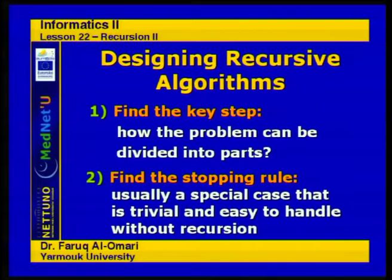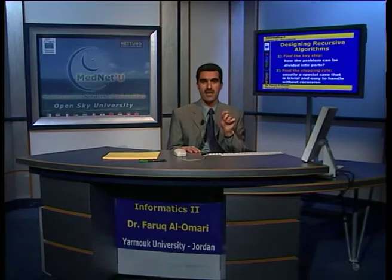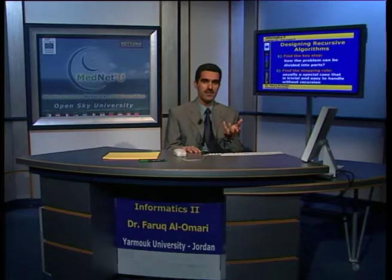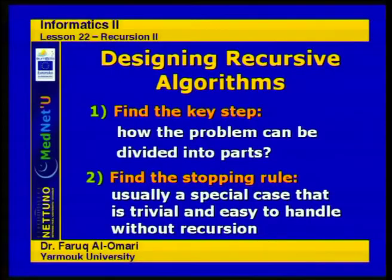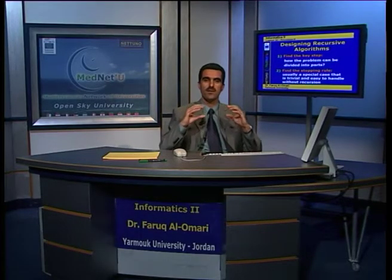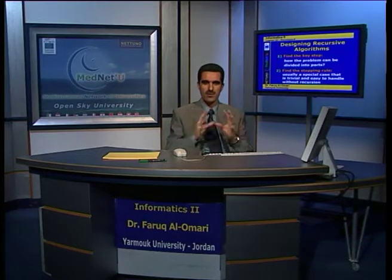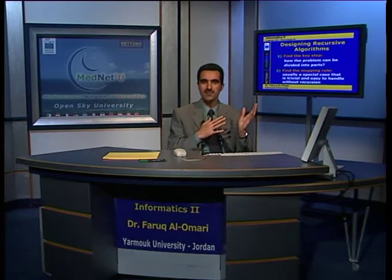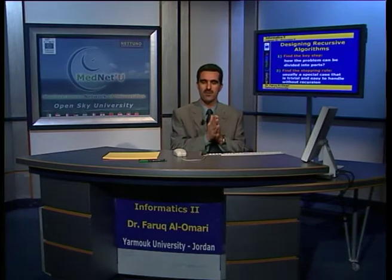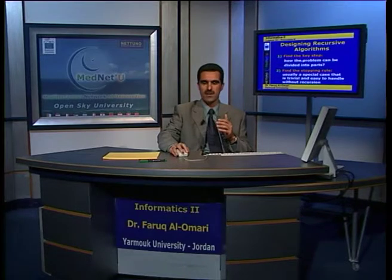Once we do that, we have to find the stopping rule. This is the key step in designing a recursive algorithm — what we call the base case or terminating condition. We have to find a special case that is very basic and trivial, easy to handle without recursion. That's the first thing I check when I enter the program — if I reach this point, I perform a very simple calculation and return. Otherwise I'm in the middle of the process handling the other sub-tasks.